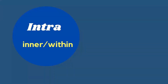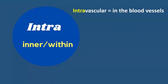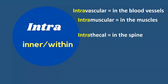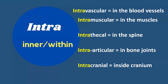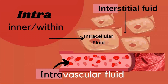Prefix intra refers to inner or within. Examples: intravascular means in the blood vessels, intramuscular means in the muscles, intrathecal means in the spine, intraarticular means in bone joints, intracranial means inside the cranium. Intravascular fluid refers to the blood. Intracellular fluid means inside the cells, while interstitial fluid is between the cells.